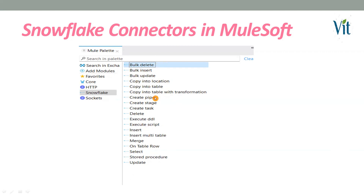These are the major connectors available for Snowflake. If you want to fetch data from Snowflake database, there is a Select option. Update, Insert, and Delete are also there, as well as Bulk Insert, Bulk Update, and Bulk Delete. Based on these connectors, we are going to perform and implement our use cases.